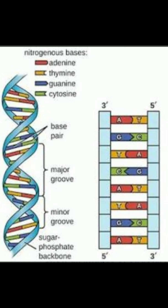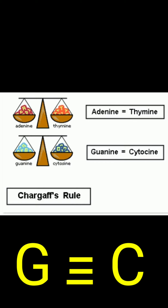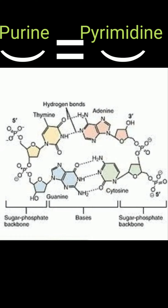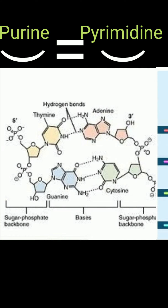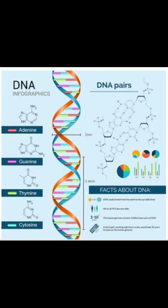Hydrogen bonding between two nitrogenous bases of the two polynucleotide chains creates complementary base pairing. According to Chargaff's rule, adenine must link with thiamine by a double hydrogen bond, and guanine always links with cytosine by a triple hydrogen bond. The amount of purine base is equal to the amount of pyrimidine base.